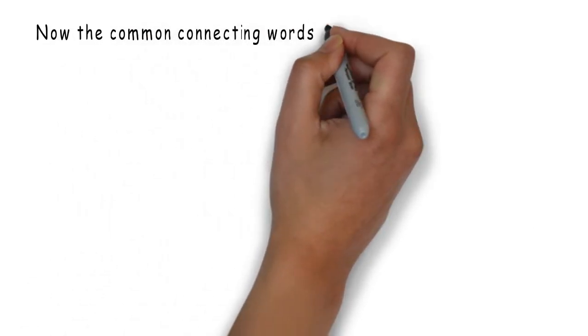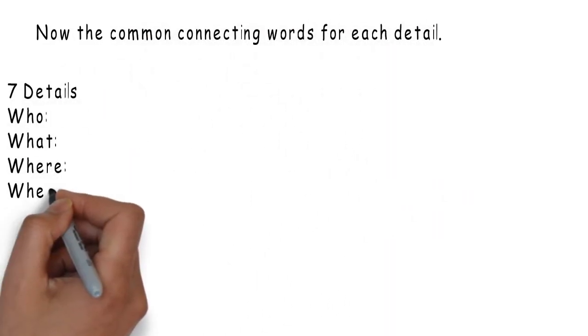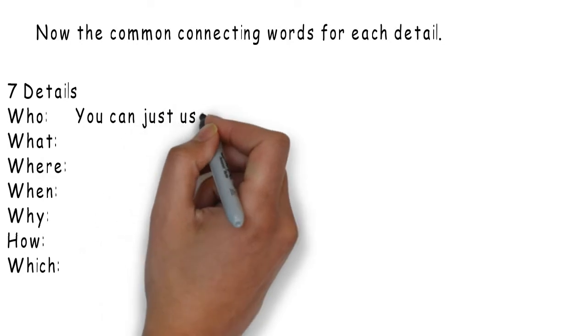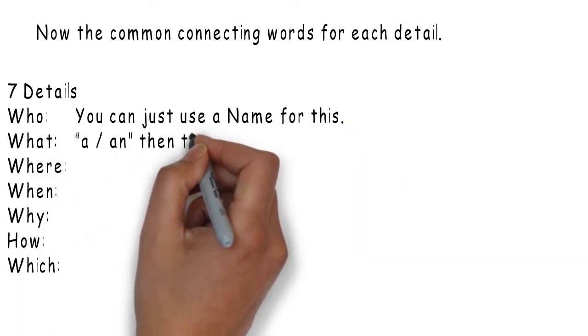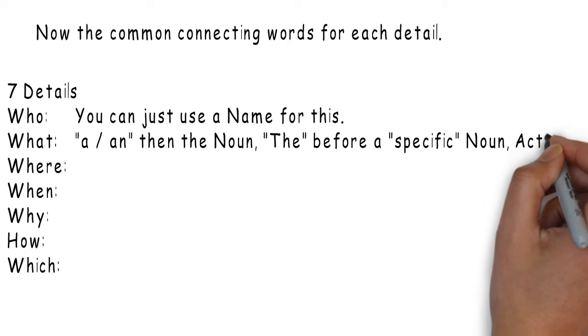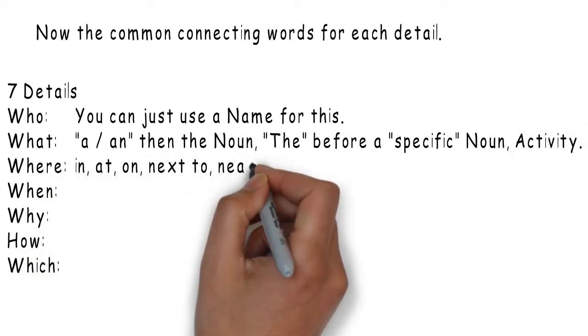Now, the common connecting words for each detail. Who – you can just use a name for this. What – a and then the noun. The – before a specific noun or activity.